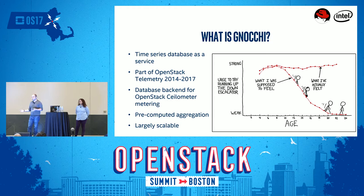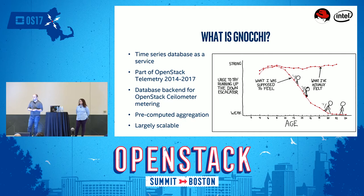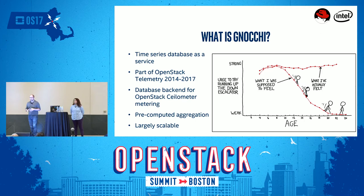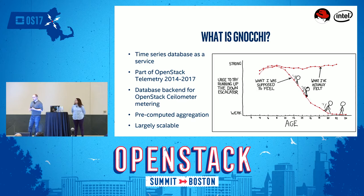For example, you can use other OpenStack services such as Keystone for authentication or Swift for storage, which is pretty handy. One thing that makes Gnocchi a bit different from other time series databases is that it does pre-computed aggregation. When you send metrics to Gnocchi, it computes things like the average, minimum, the maximum, and the number of points you send per period, and stores them for a defined amount of time. So when you request things like the metrics of the last hour with five-minute granularity, it's already computed and pretty fast — there's nothing to be computed on demand.